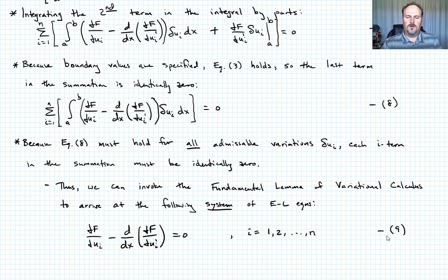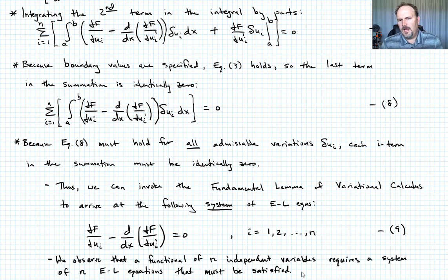Okay, so what is this saying is that if we have a functional of n independent variables u, then it results in a system of n Euler-Lagrange equations that must be satisfied. Okay, so I think in the course of this derivation, we ended up with the result that I could have just given you, but it falls naturally from it.